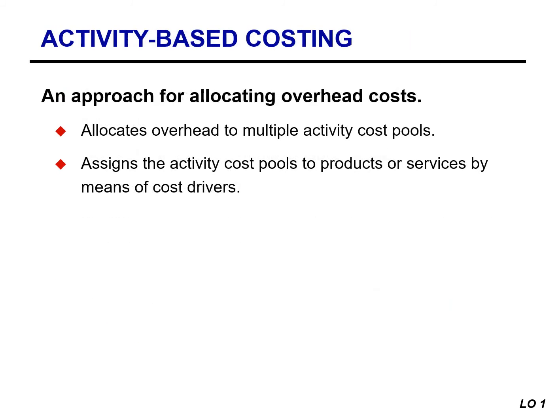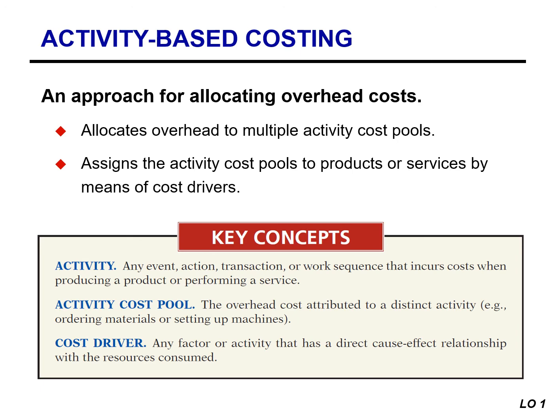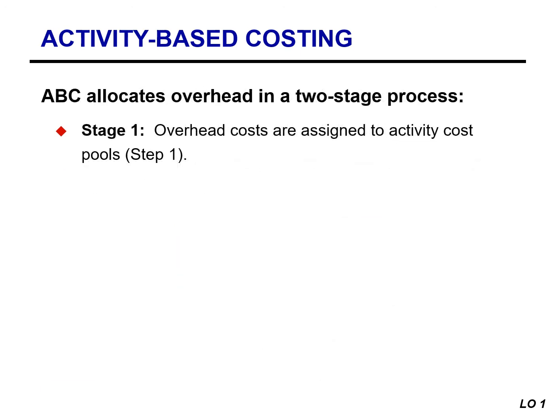Activity-based costing, often referred to as ABC, is an approach for allocating overhead costs. ABC allocates overhead to multiple activity cost pools and then assigns those cost pools to products and services by means of a cost driver. ABC allocates overhead in a two-stage process. The first stage, step one, assigns overhead costs to activity cost pools. Examples of activity cost pools include ordering materials, setting up machines, assembling products, and inspecting products.